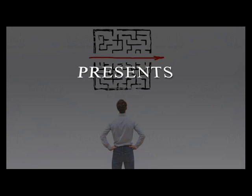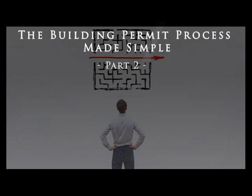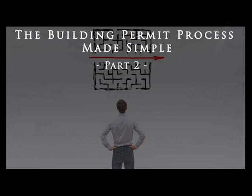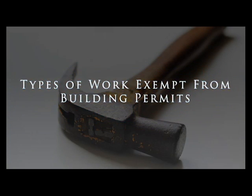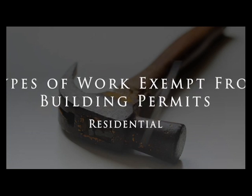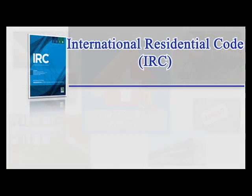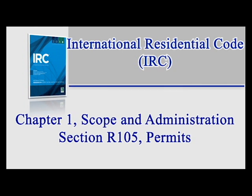Welcome to another edition of Building CodeBuddy Online. This video is part two of the building permit process made simple. On this video, I will review types of work that are exempt from building permits for residential projects. The work exempt from building permits covered on this video can be found in the International Residential Code, Chapter 1, Scope and Administration, Section 105.